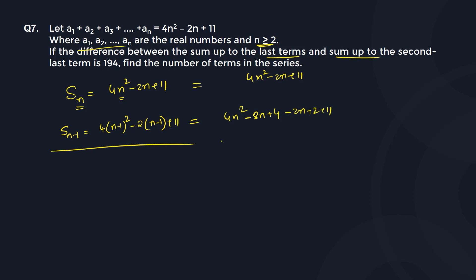Simplifying this, we get 4n squared minus 10n, and the constant terms: 4 plus 2 plus 11 gives 17. So Sn-1 equals 4n squared minus 10n plus 17.